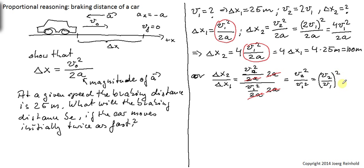And you'll find also that delta x2 equals 4 delta x1 as before.